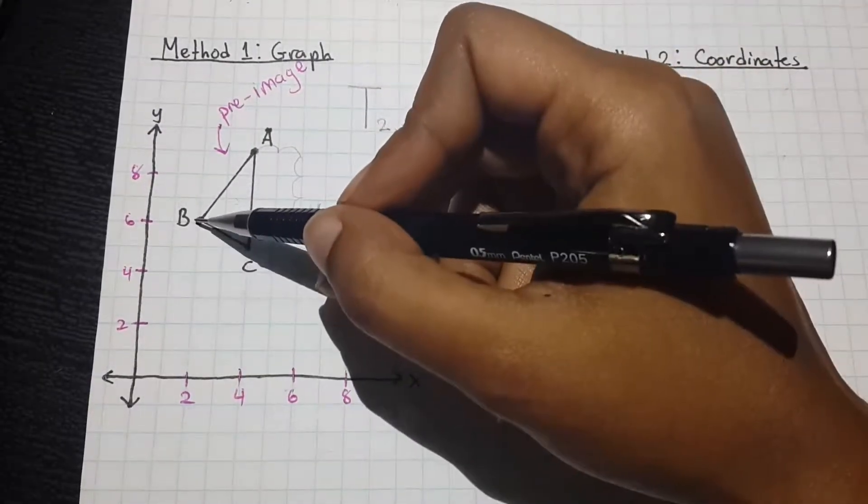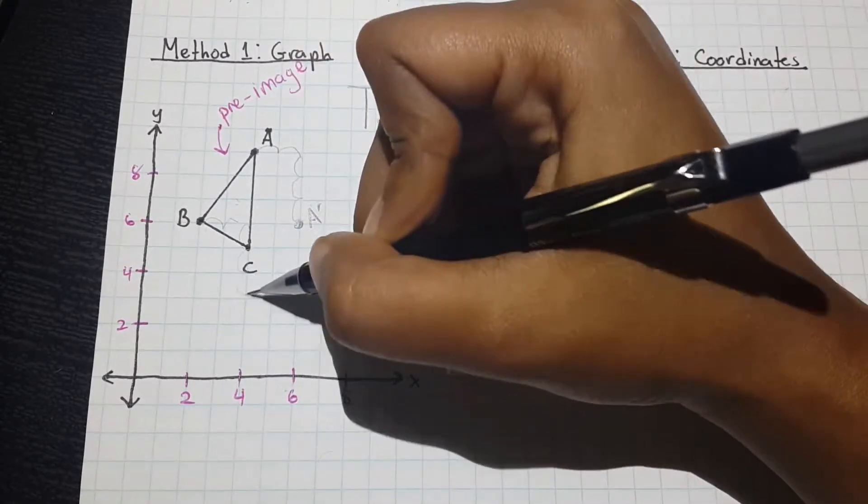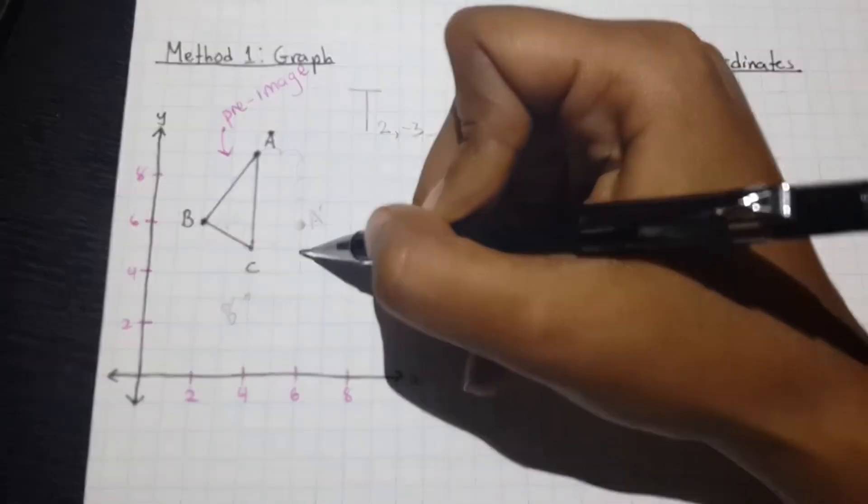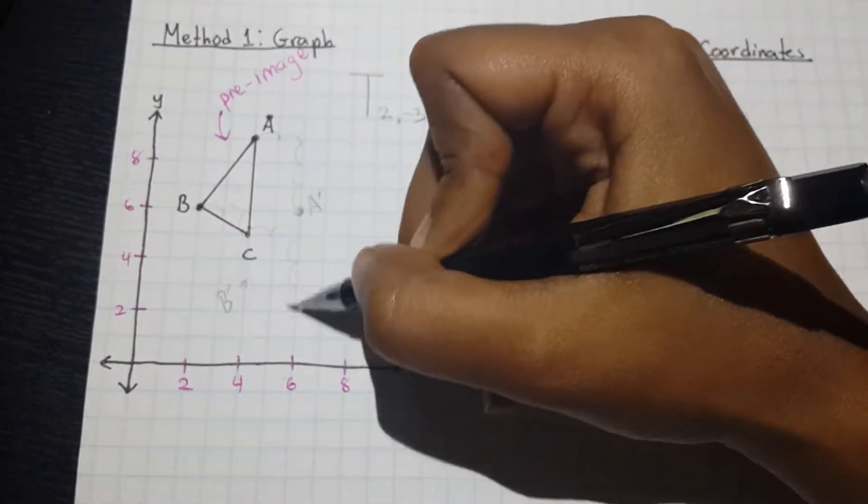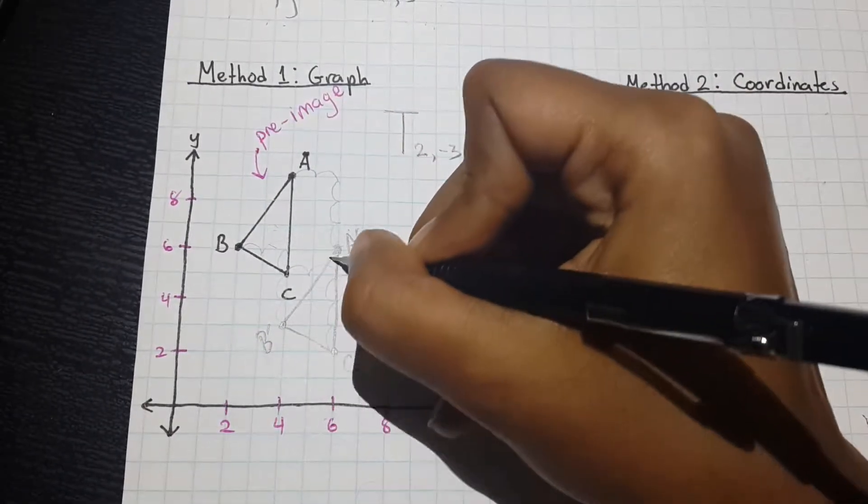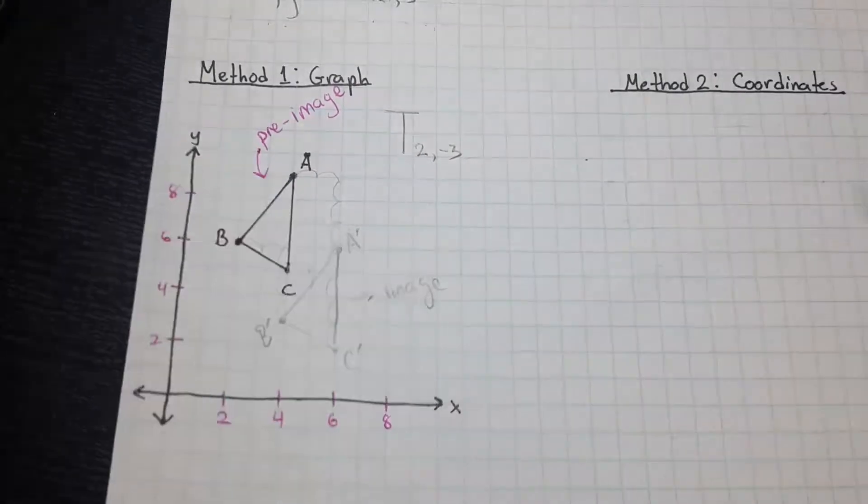And I'm going to perform it the same way for B and C. So, again, two units to the right, three units down for B prime, two units right, three units down for C prime. And you would just connect all the points to put together your image figure.